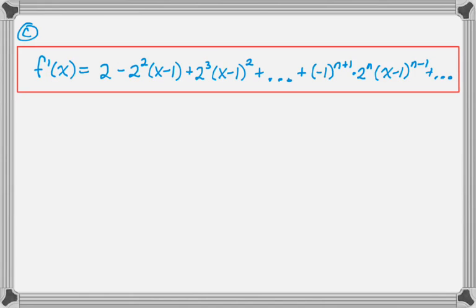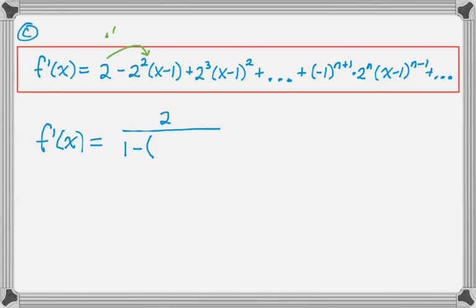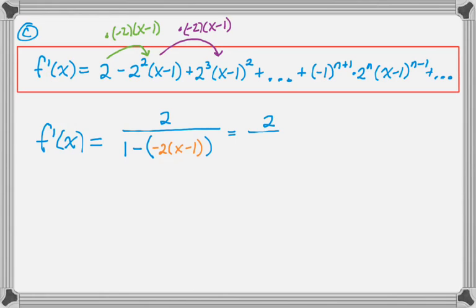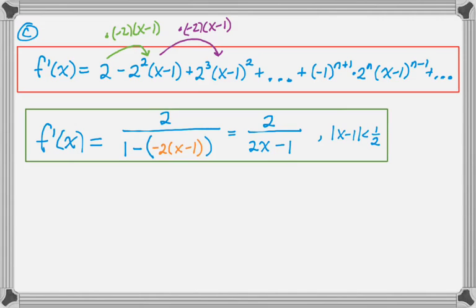Since f′ is geometric, f′ equals the first term over (1 minus the ratio). The first term is 2. To find the common ratio, notice that going from the first term to the second requires multiplying by −2(x−1), and that pattern continues. So the ratio r is −2(x−1), giving f′ = 2 / (1 − (−2(x−1))) = 2/(2x−1), valid on the interval where the absolute value of (x−1) is less than 1/2.